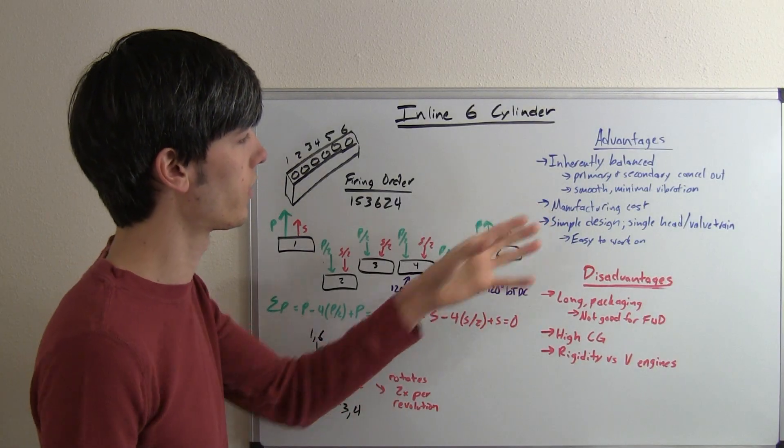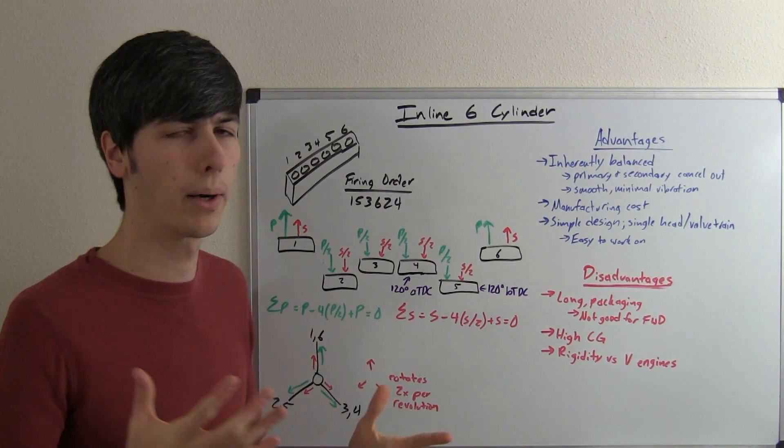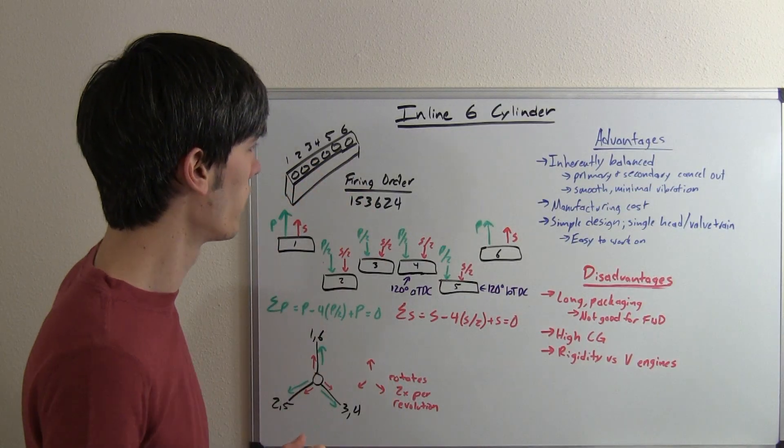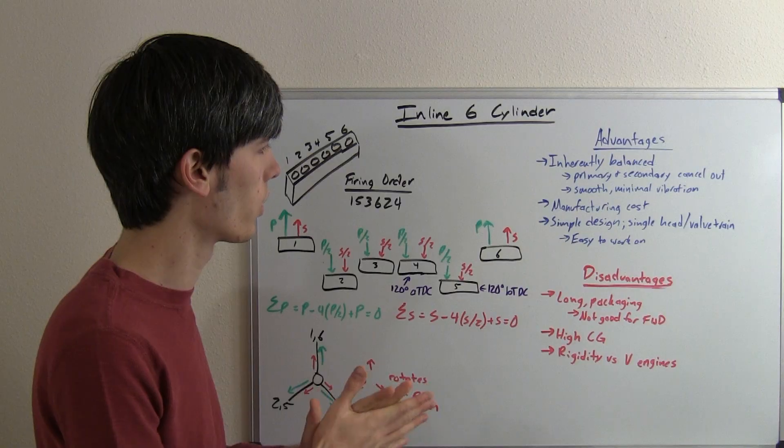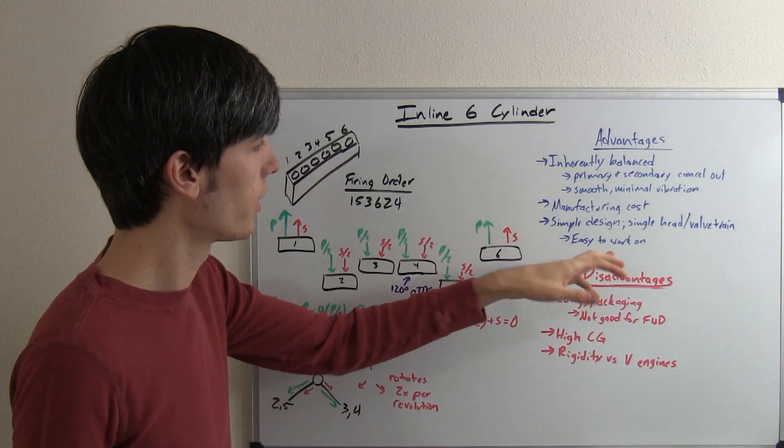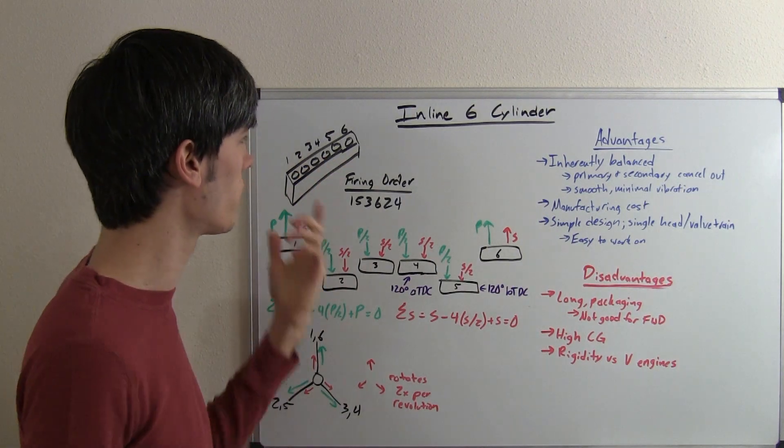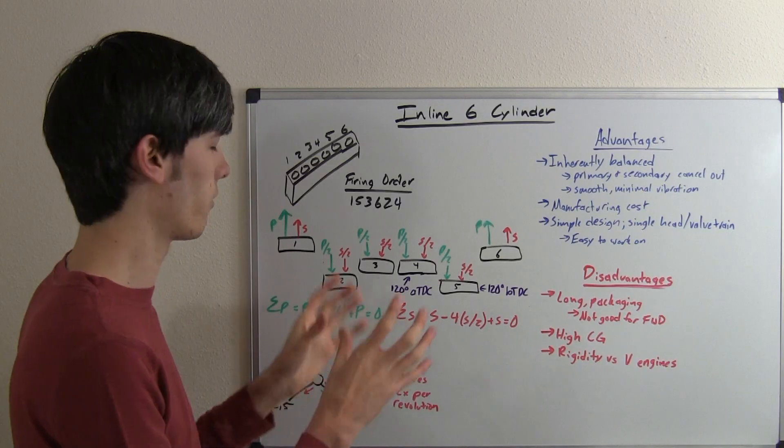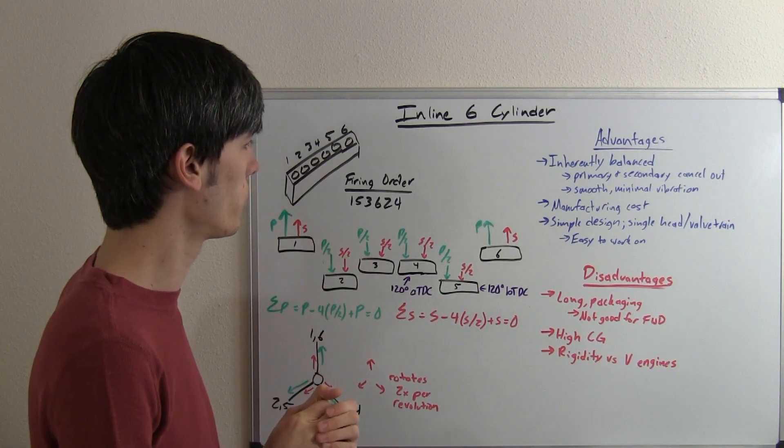The other thing is this has a low manufacturing cost when compared to V engines. It's just a single block, a single straightforward setup, and so it's fairly cheap to make versus a V-style engine. A simple design, you're only going to have a single head, a single valve train, so that also means it's going to be a little bit easier to work on versus having two heads and two valve trains.